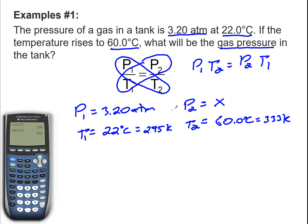I need to isolate P2 because that's my X. So P2 needs to be by itself. I'm going to divide both sides by T1. T1 here is going to cancel out. I'm left with P1 times T2 divided by T1 equals P2. I'm going to go ahead and start plugging everything into the formula. P1 is 3.20 atm times T2, which is 333 Kelvin, divided by 295 Kelvin.